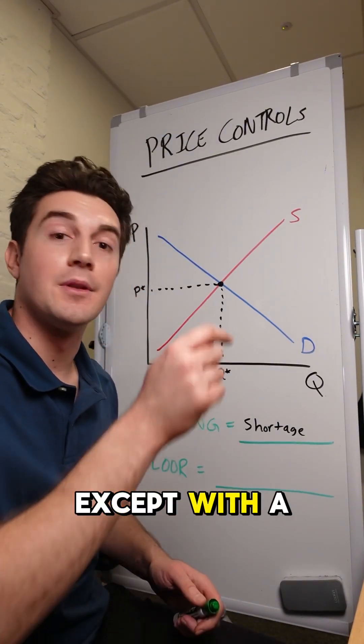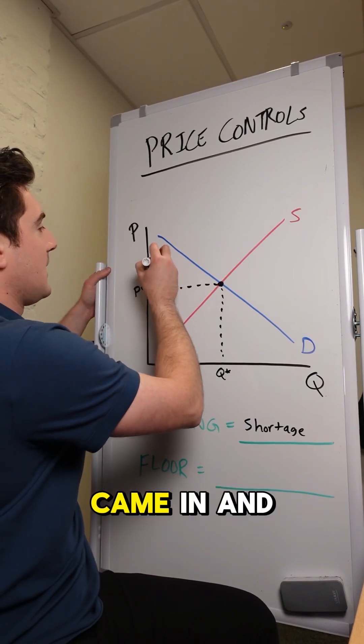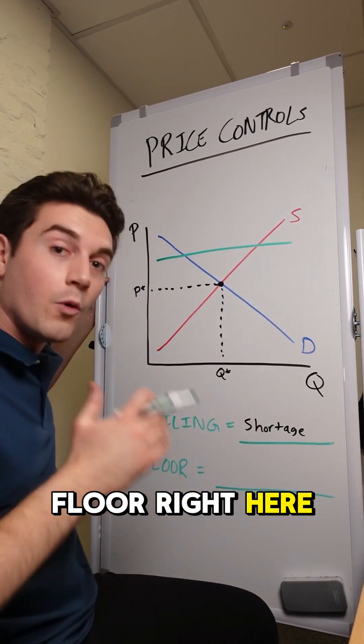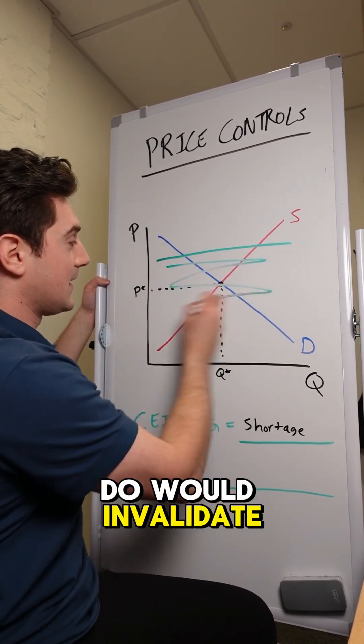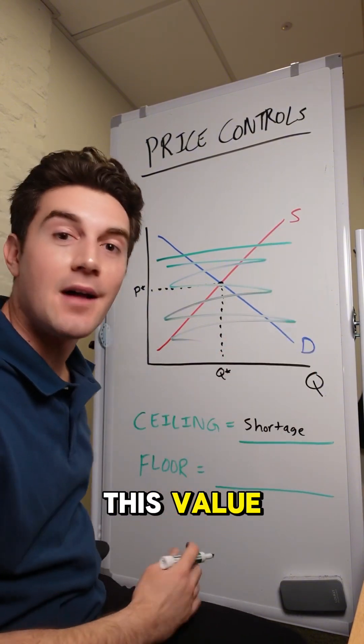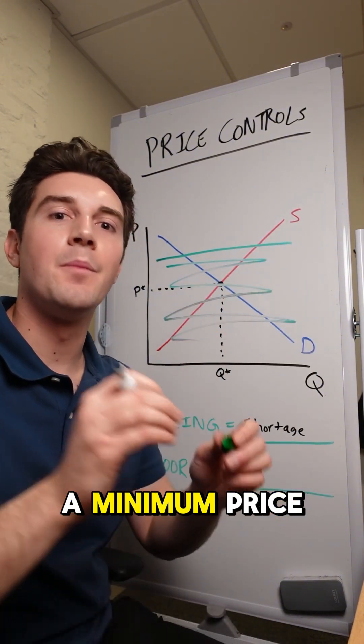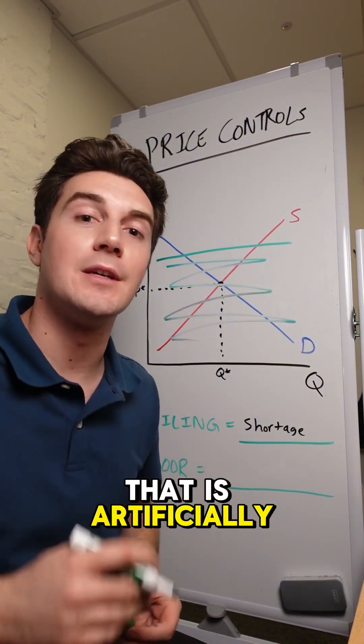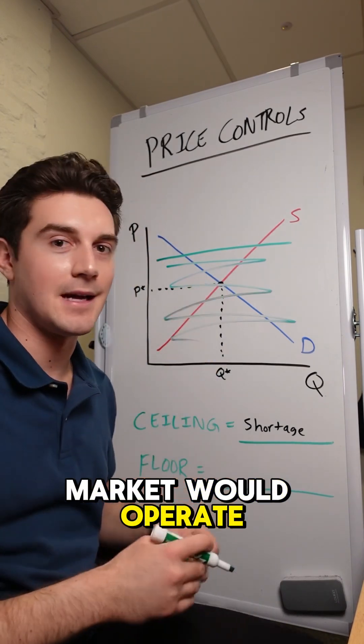Wait, let's do the same thing that we just did, except with the price floor. Imagine the government came in and set a price floor right here. What this would do would invalidate any price below this value. They are setting a minimum price in the market that is artificially above what the market would operate at without interference.